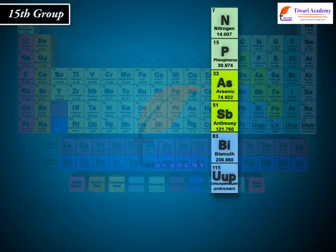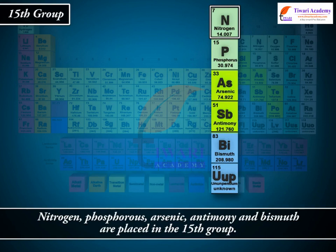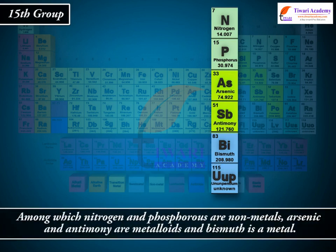In the 15th group, Nitrogen, Phosphorus, Arsenic, Antimony and Bismuth are placed. Among which, Nitrogen and Phosphorus are non-metals, Arsenic and Antimony are metalloids, and Bismuth is a metal.